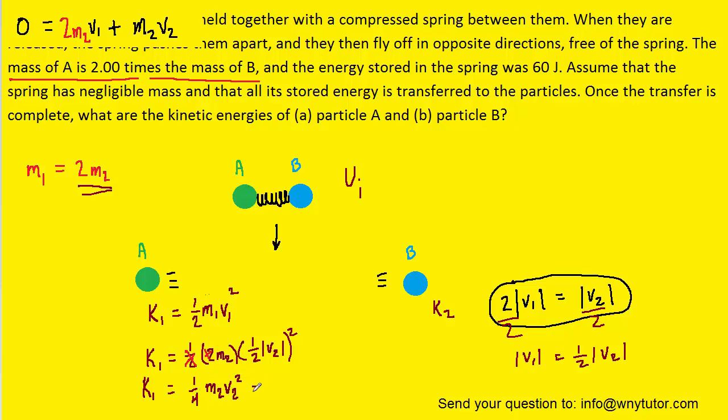We'll notice that we can rewrite the one-fourth in a bit of a clever way. We can write that as one-half times one-half, and then we still have the m2v2 squared. The reason that's a neat way of writing it is because right here, this one-half m2v2 squared, that's the expression for the kinetic energy of particle two.